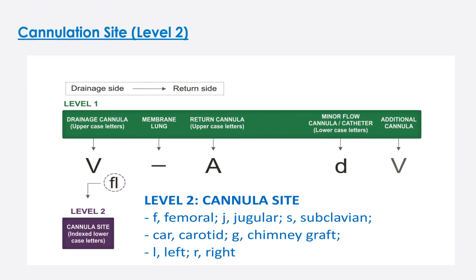The next level of nomenclature is the cannulation site. For example, for V, FL is written — F in lowercase indicating femoral, and L in lowercase indicating left. J indicates jugular, S indicates subclavian, and G indicates a chimney graft. CR indicates carotid, and L and R indicate left and right respectively.